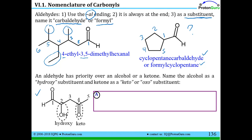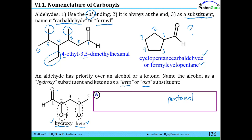Here is an example with an aldehyde, an alcohol, and a ketone all in the same molecule. The aldehyde has the highest priority, so the name ends in 'al.' The alcohol and ketone must be named as substituents — the alcohol becomes 'hydroxy' and the ketone becomes either 'keto' or 'oxo.' With a five-carbon chain and an aldehyde, the base name is pentanal. Carbon 2 is hydroxy and carbon 4 is keto. Alphabetically, H comes before K, so the full name is 2-hydroxy-4-ketopentanal.